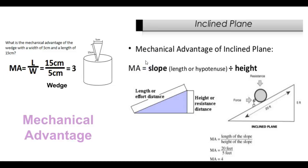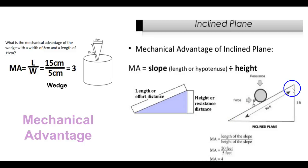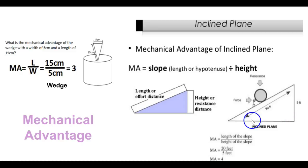Over here we're going to find the mechanical advantage of our inclined plane. We can see that MA equals slope length, or the hypotenuse, divided by height. We plug everything in: our length of the slope is 20 feet — remember, that's opposite our right angle, so that's our hypotenuse. And our height is the distance from the top to the actual bottom of the slope, which is 5 feet. So we put 20 feet over 5 feet, and we get a mechanical advantage of 4.